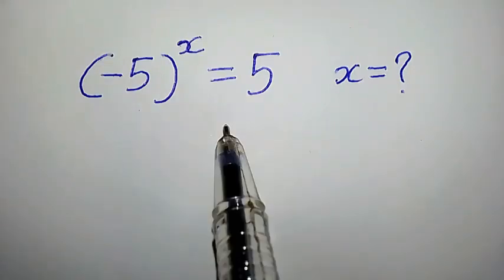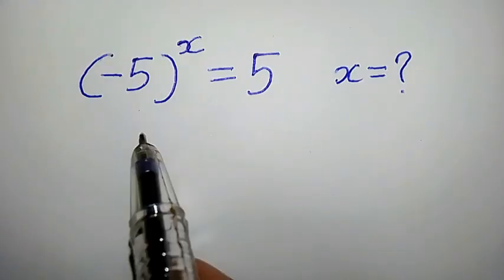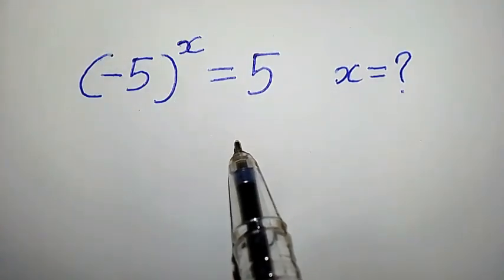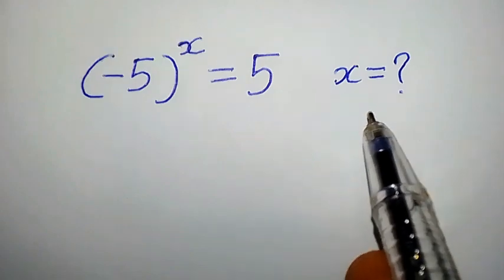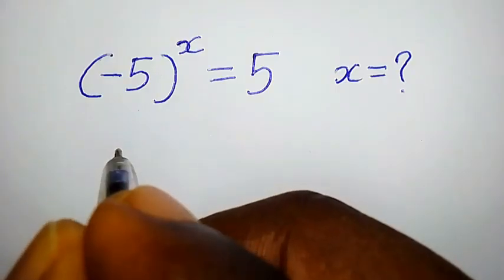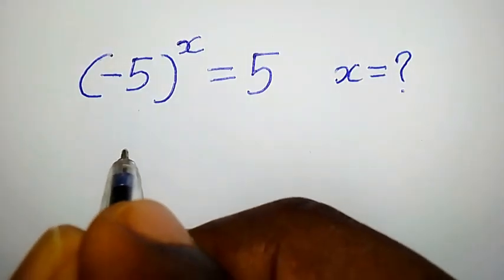Welcome to solving this challenging math problem: (-5)^x = 5. How do we find the value of x? First, let us take the natural logarithm of both sides.